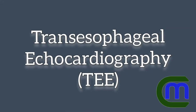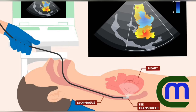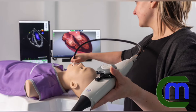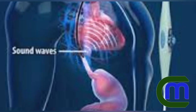Welcome to Current Medicine Channel. Transesophageal echocardiography, or TEE, is a test that produces pictures of the heart. TEE uses high-frequency sound waves — ultrasound — to make detailed pictures of the heart and the arteries that lead to and from it.